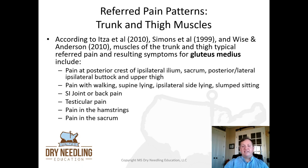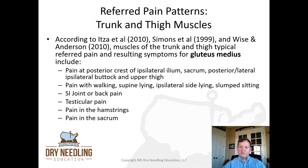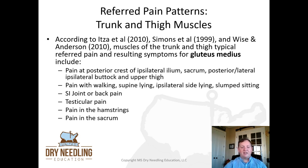For gluteus medius, oftentimes it is weak in individuals. Pain at the posterior crest of the ipsilateral ilium, the sacrum, the posterior-lateral ipsilateral buttock, and the upper thigh. Pain with walking, supine laying, ipsilateral side lying, slump sitting, SI joint or back pain. Testicular pain, pain in the hamstrings, and pain in the sacrum are all implicated with gluteus medius.